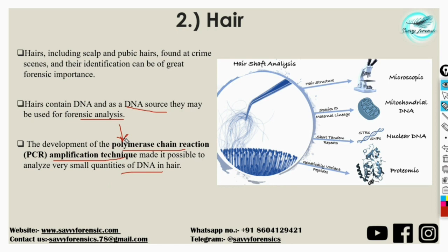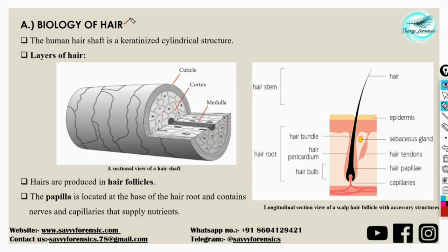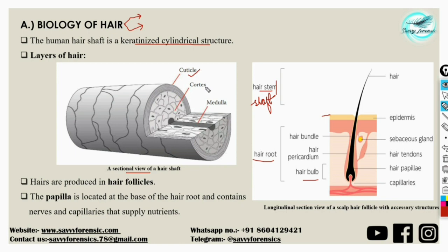Hair has two parts: the hair shaft and the hair root. The hair shaft is the upper portion visible above the skin surface, while the hair root is embedded in the dermis. Taking a sectional view of the hair shaft reveals three layers: the cuticle (outermost, overlapping dead keratinized cells), the cortex (contains cortical fusi and cell organelles), and the medulla (the central core layer).